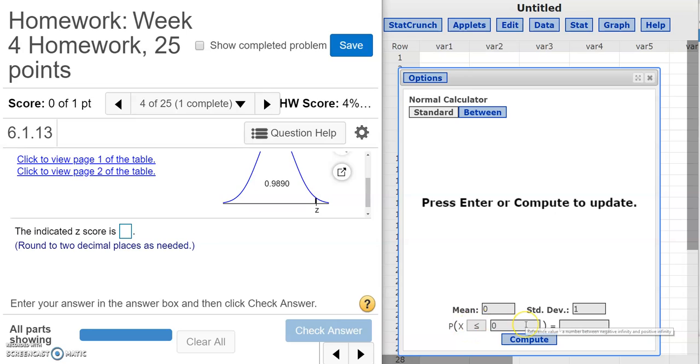If we come over here to StatCrunch, this section right here corresponds to the number or numbers that are down here on the bottom. In this case, we don't know that number. That's what we're looking for. So we can't fill anything in here at this moment. The number that goes here is the probability. The probability in the picture is the shaded area. In this case, it's not shaded, it's just provided. So we were given the area of 0.9890. Now I can see that that area is the area that is less than or to the left of this z that I'm looking for.